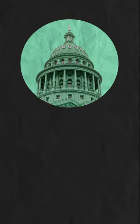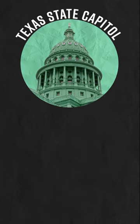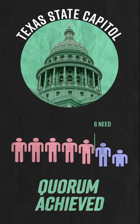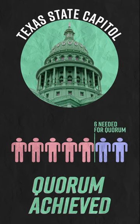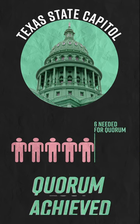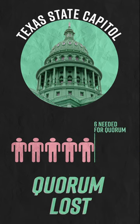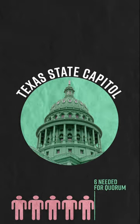Sometimes quorums can be used as a way of preventing laws from being passed. For example, in 2021, Democrats in the Texas State Legislature walked out to break the quorum so Republicans could not pass any bills.